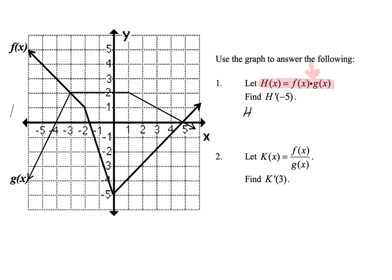Let's start by writing out the product rule. If we're finding the derivative of h of x, and it's the product of f times g, we take the first function f and multiply it by the derivative of g, then add that to the second function g multiplied by the derivative of the first function, f prime. So there's our product rule.